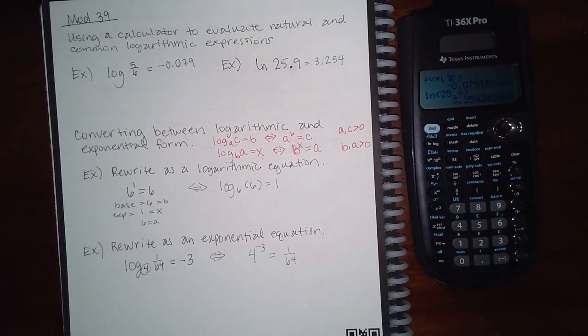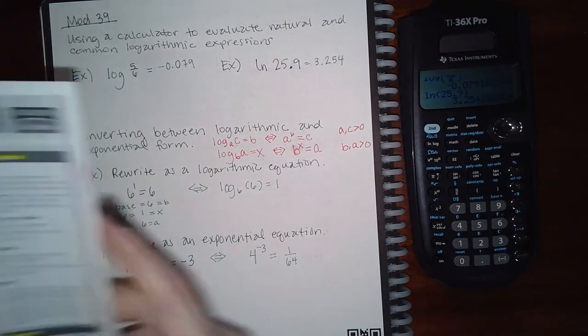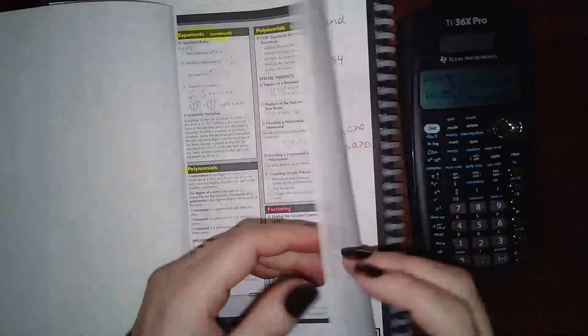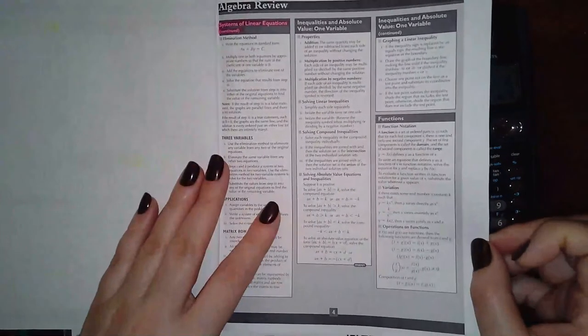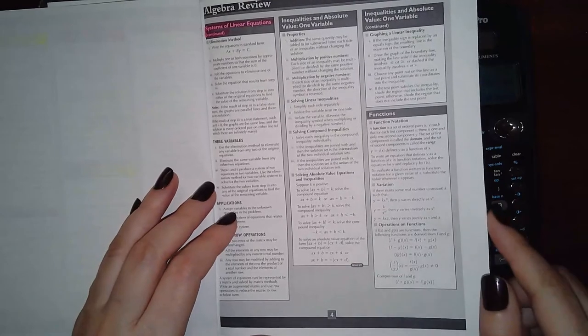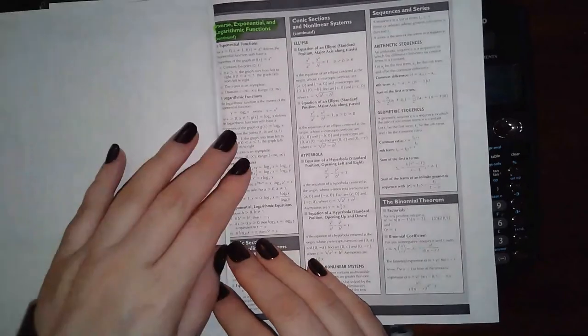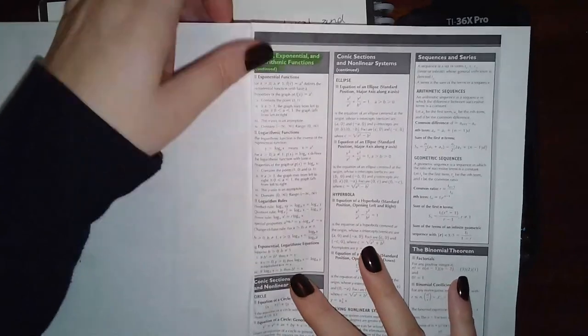The next problem is about converting logarithmic and exponential form. Both the book and the pamphlet I've given you have the formula, but I like to use special letters because they help me identify the different parts of the problem. Here they have the formula and notice the letters they use.